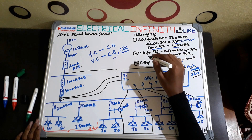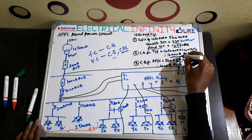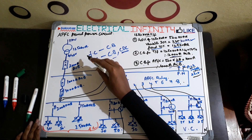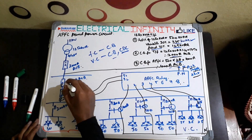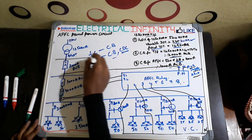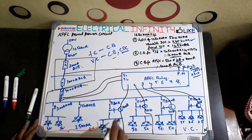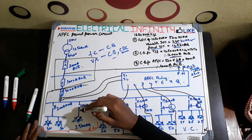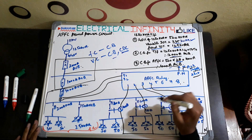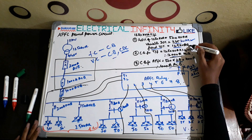This is how the APFC panel power circuit is designed. We used a 1250 kVA transformer, calculated the circuit breaker for it, and got a 2000 ampere ACB for the 1250 kVA transformer. We are using 2000 ampere ACBs — one for the transformer panel and one for the APFC panel — and this is the reason why two ACBs are used.